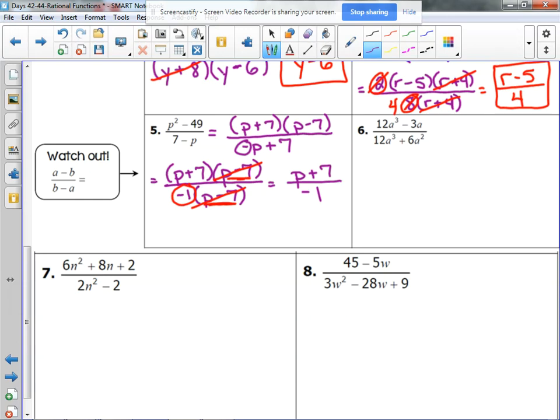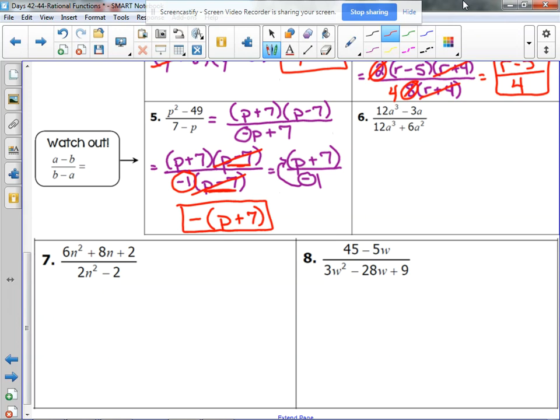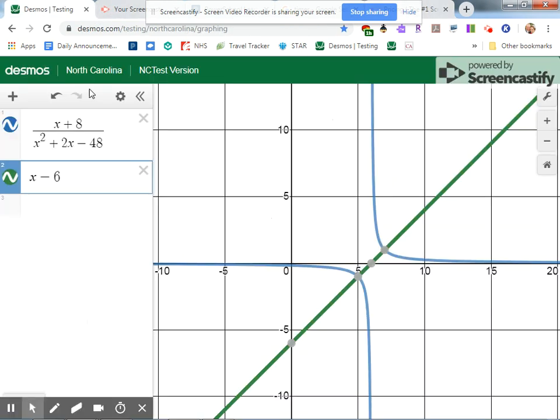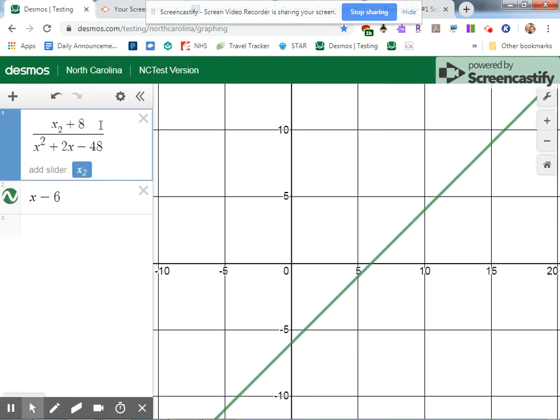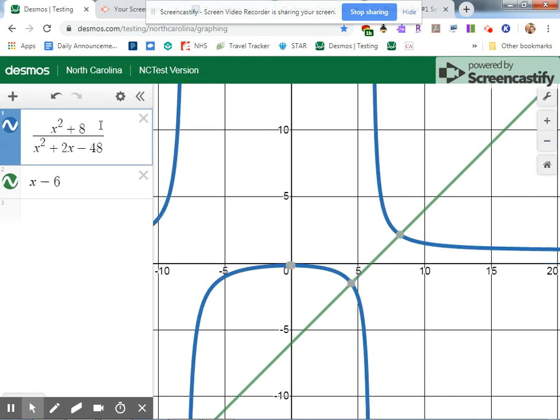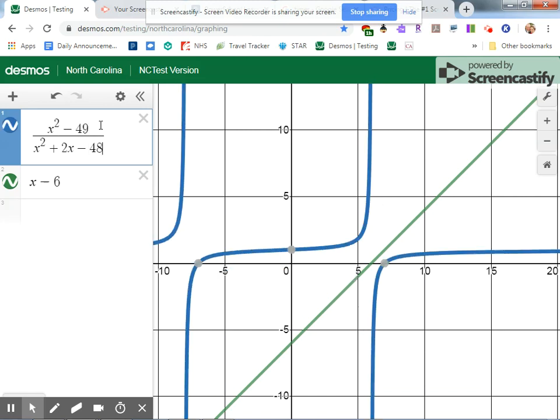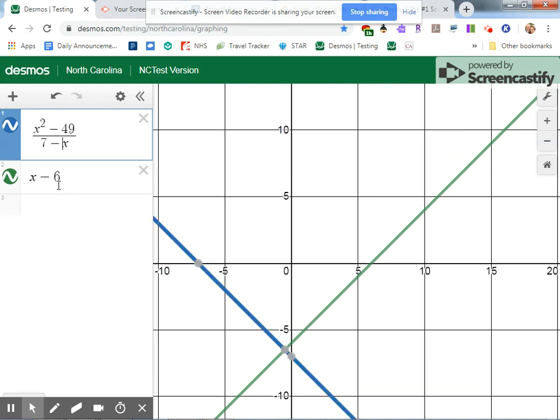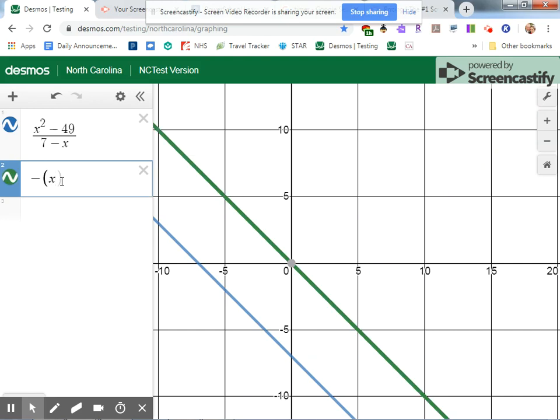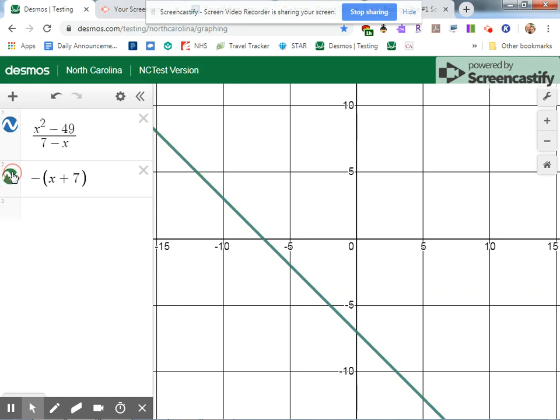But you're never going to see an answer choice that looks like that. What they're going to do is they're going to take this negative right here and they're going to slide it to the numerator. However, we're going to leave the parentheses around the p plus 7. Normally we would drop that, but because we're moving that negative up there, we've got to keep the parentheses around the p plus 7. And I'll show you the graph here to show you why. Let's look at this. x squared minus 49 over 7 minus x. And we said that the correct answer should look like this. It does. That's the exact same graph.